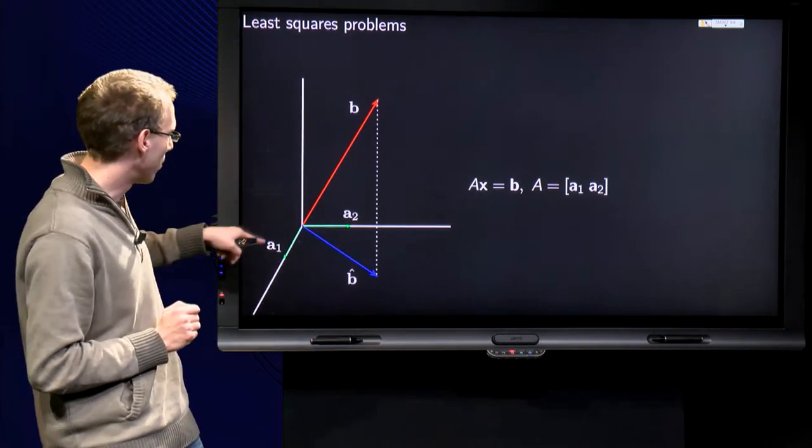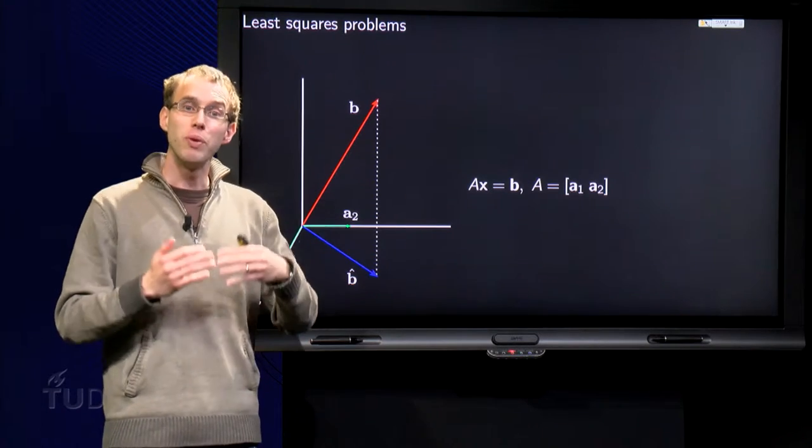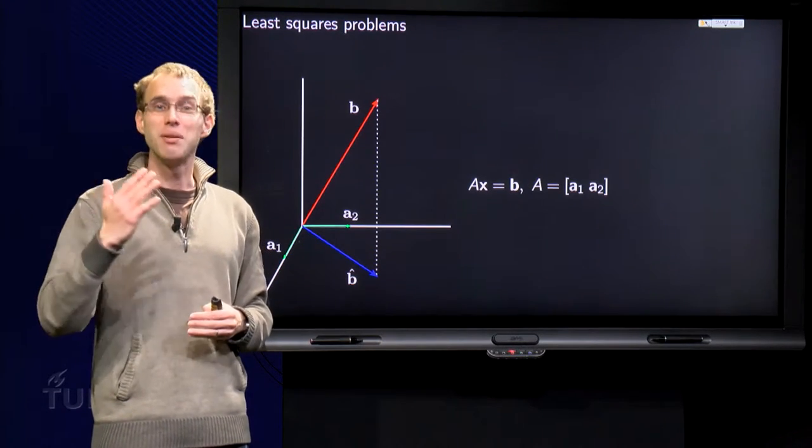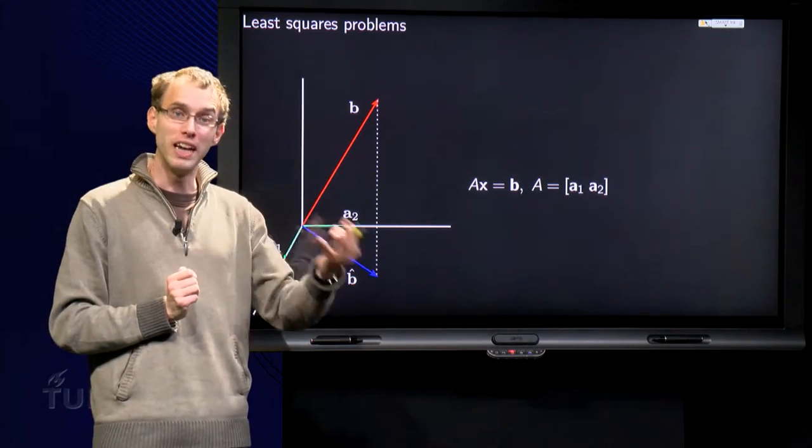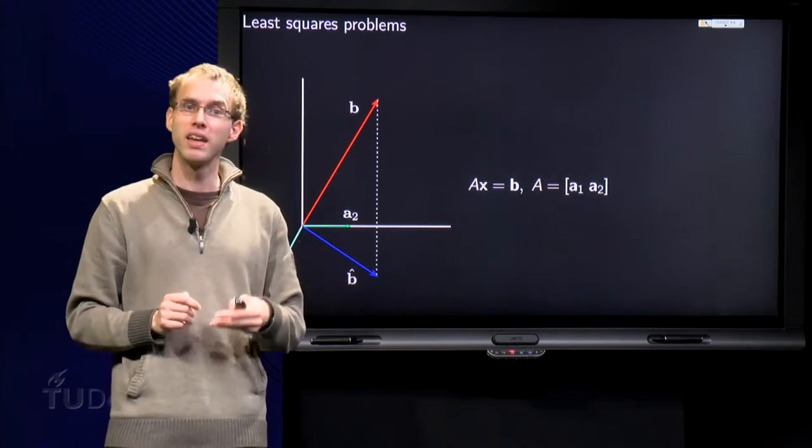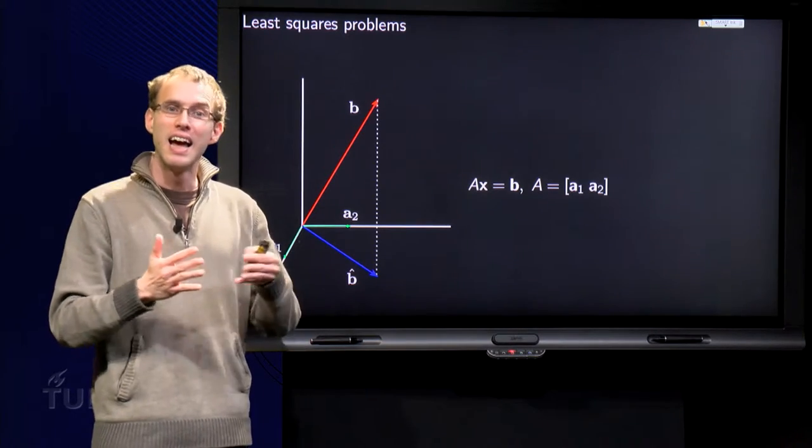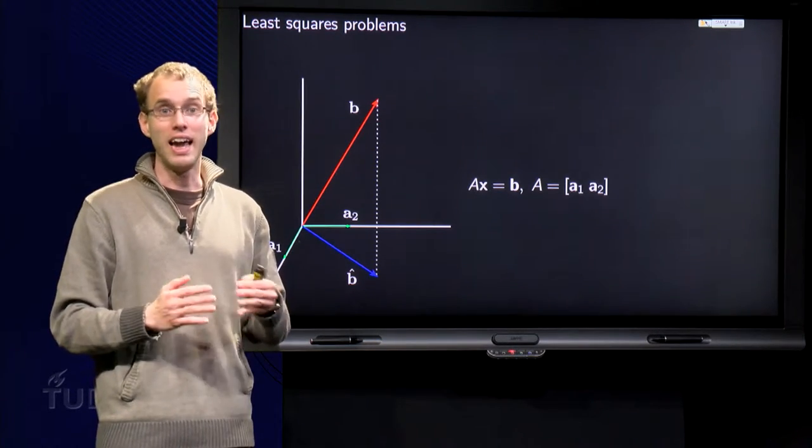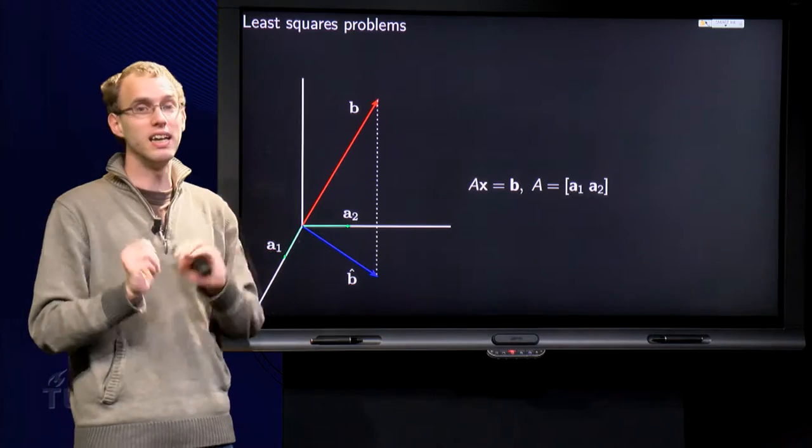A has two columns, say a₁ and a₂. Now we know that AX is always a linear combination of the columns a₁ and a₂. So if we have a₁ and a₂ in the XY plane, then any AX will always be in the XY plane.